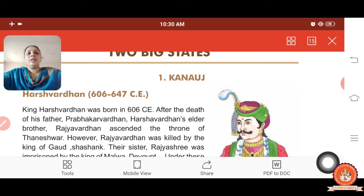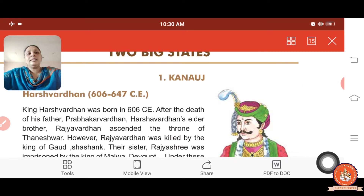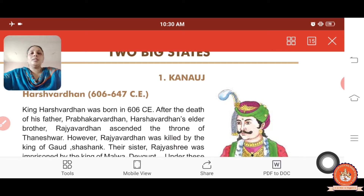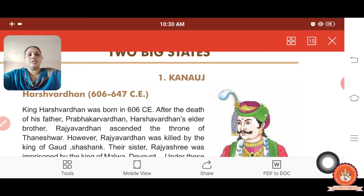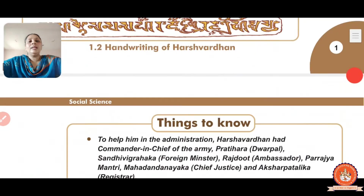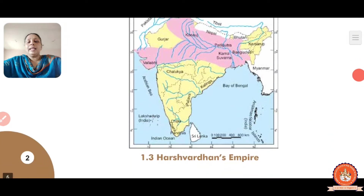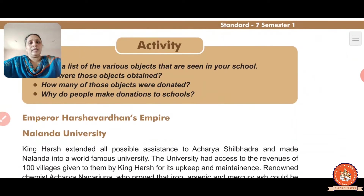In the beginning, we will take a small introduction from the last video. That was about two states of history. One is Kanauj and the second was Vatapi. In Kanauj, the king was Harshvardhana. We were given information about Harshvardhana. Now we will start the life of the people of Harshvardhana.